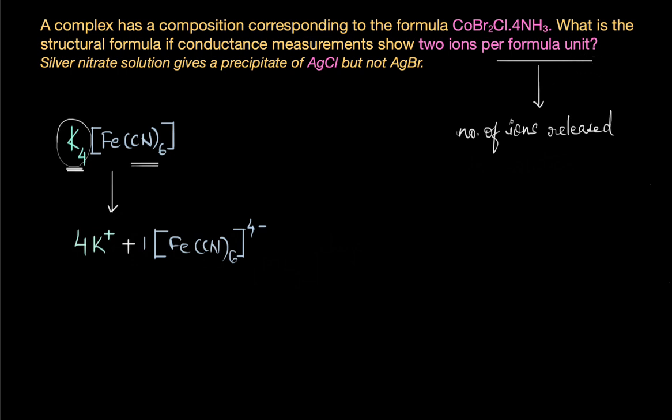One must be the coordination sphere MLₓ where the metal is coordinated to the ligands with a charge that can be plus or minus. In this case the coordination sphere had a negative charge, but it can be a cationic complex as well. So basically one must be a coordination complex and the other must be the counter ion.